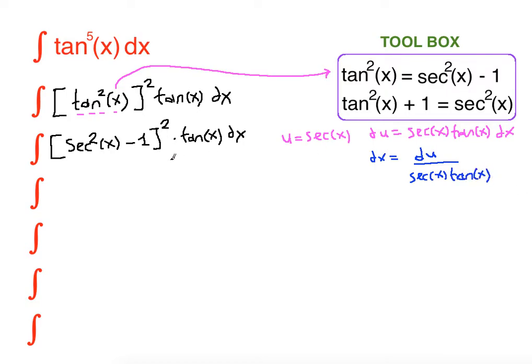Now let's rewrite in terms of u. So we have u squared minus 1 squared tangent x here. Instead of dx we are going to write du, instead of secant x we are going to substitute u, and we have tangent x.